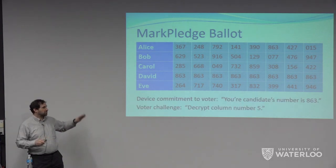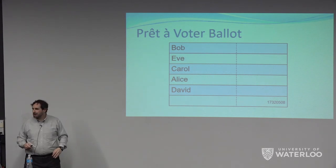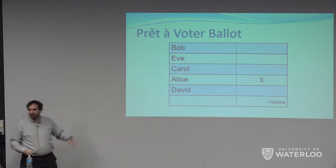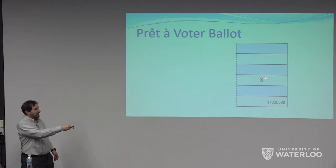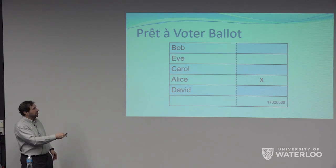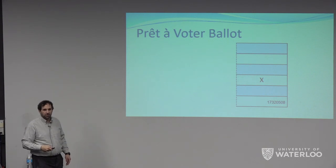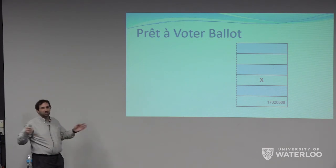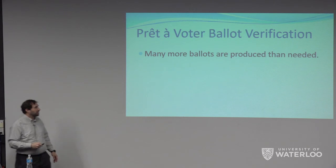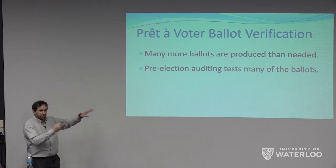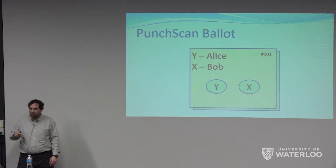One thing I like about Prêt à Voter is it's pretty easy to explain to voters — it's just a coding of the ordering, so this is how your vote is preserved. You can check the unused ballots beforehand and afterwards to make sure the coding is really correct. Punch scan is another trick where you split things up — I won't have time to cover that. Scantegrity is a very nice system using invisible ink: ballots are pre-marked with invisible ink, voters are given invisible-ink-revealing pens, and you swipe over whatever choice you want.